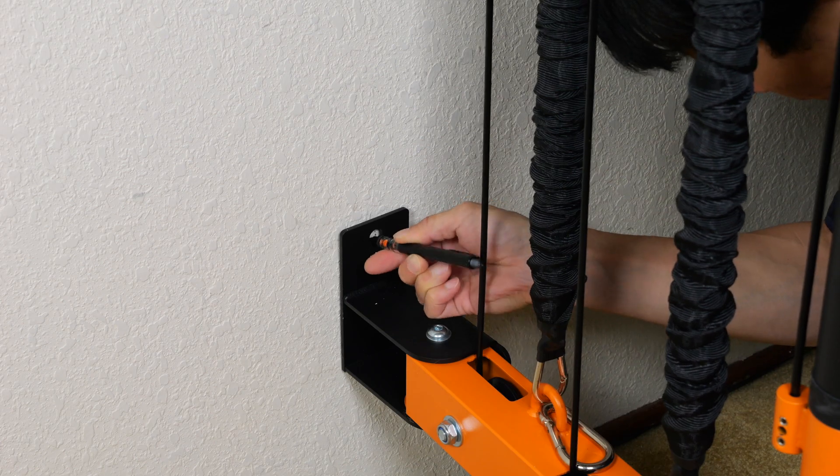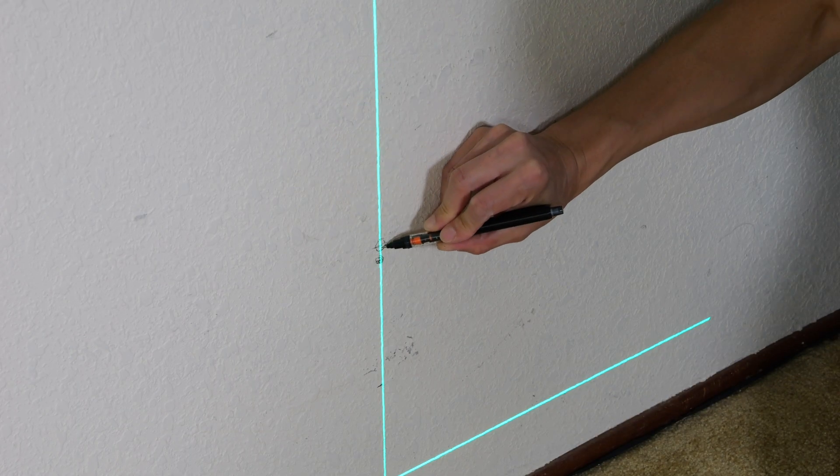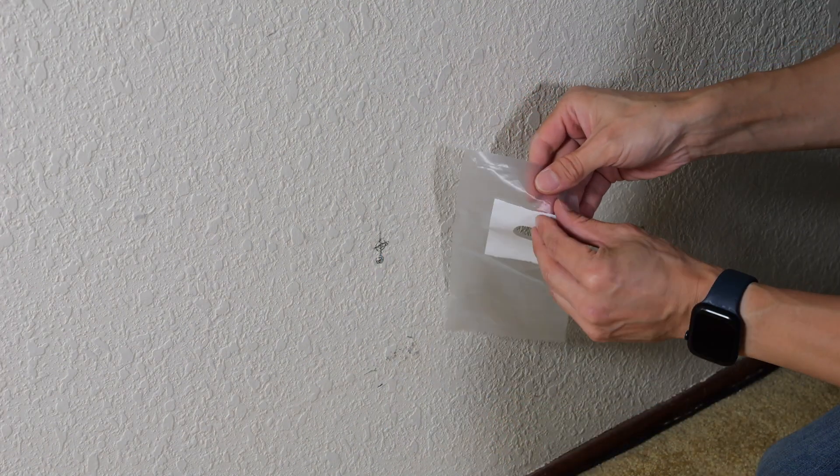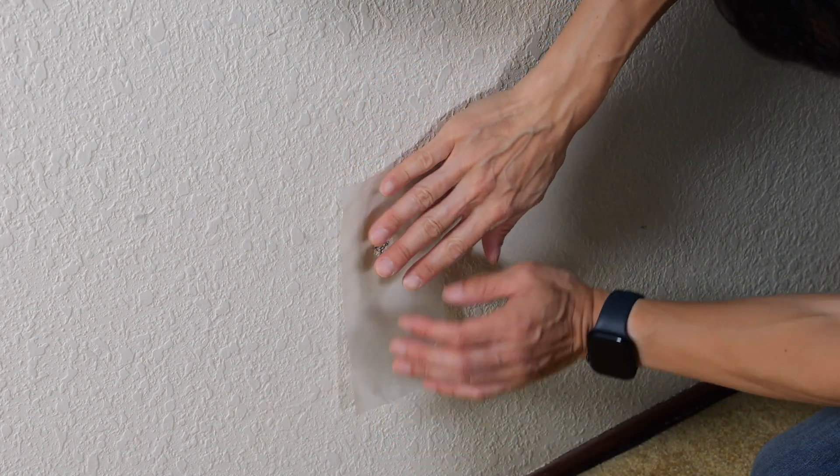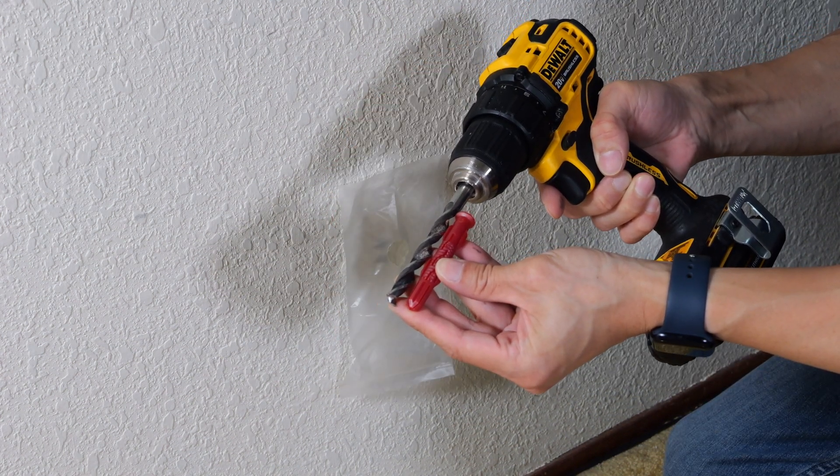I'll mark the bottom hole first. We know how high that hole needs to be. We'll put it right there. Put one of these fancy bags here. Put it around the hole. It needs to drill almost the entire length of the drill bit. So let's go at it.